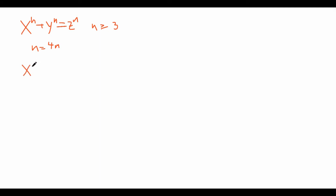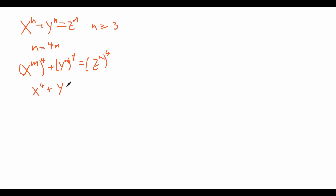x to the power of 4m is x to the power of m, all to the power of 4. Similarly, y to the power of 4m equals y to the power of m to the power of 4, and z to the power of 4m equals z to the power of m to the power of 4. So in order to prove that this has no positive integral solutions, it suffices to prove that x to the power of 4 plus y to the power of 4 equals z to the power of 4 has no positive integral solutions, because if we replace x with x^m, y with y^m, and z with z^m, it will have no positive integral solutions as well.